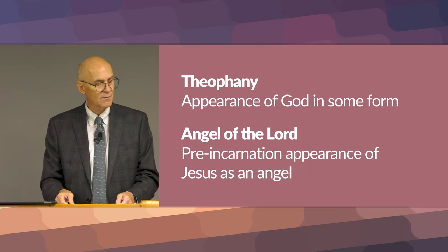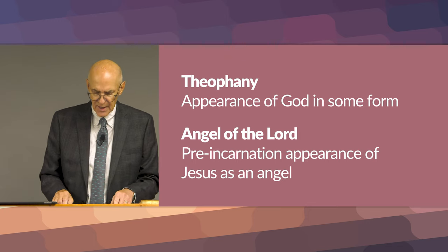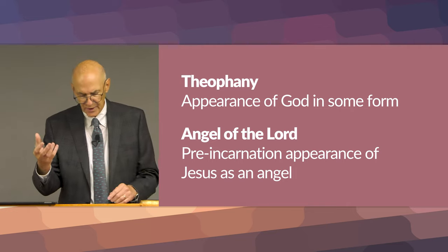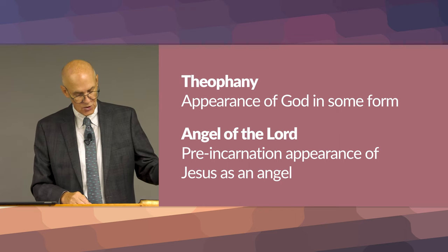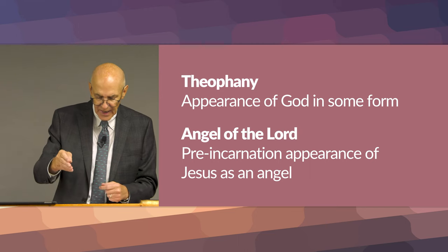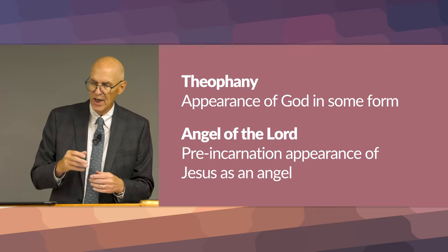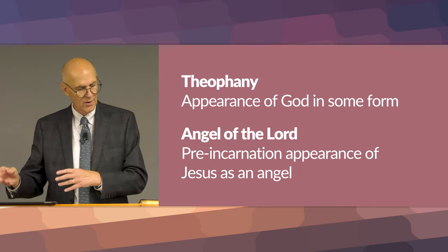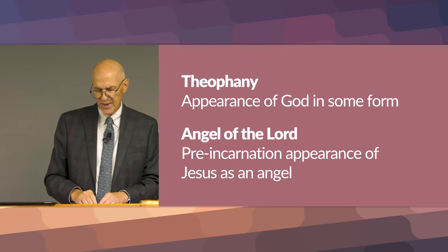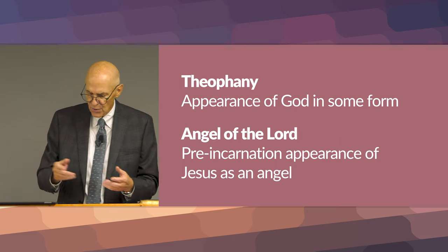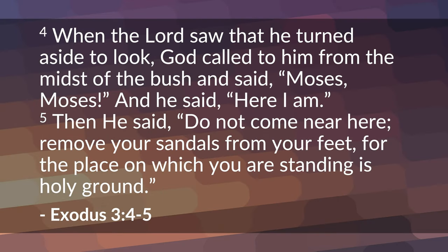There are not many miracles in the Old Testament, considering there are 39 books. Miracles, when they do take place, tend to be grouped together in clusters at certain points in the history of Israel — for example, at the Exodus, during the conquest of Canaan, and during the prophetic ministries of Elijah and Elisha. Miracles occurred at times of crisis for Israel, at times when its national survival was threatened. We continue reading in chapter 3, verses 4 to 6.